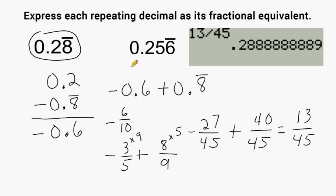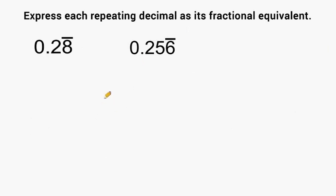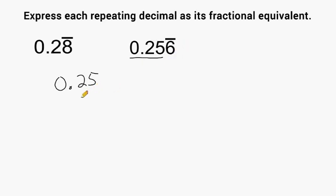Let's convert this last decimal value into its fractional equivalent. We start by writing everything that is not underneath the repeating bar: 0.25. So we wrote two digits that are not repeating. The part that is repeating is the 6, so we write two of those underneath the 0.25 — we write 0.66.